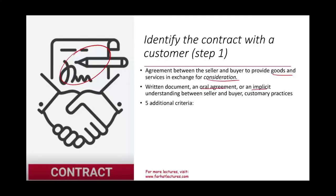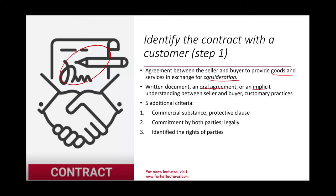We need five additional criteria to confirm a valid contract. First, it must have commercial substance — a protective clause to prevent companies from entering sham transactions just to inflate revenue. Second, both parties must be committed and aware of their obligations. Third, the rights of each party are identified in the contract. Fourth, payments are identified — they don't have to be fixed, but they have to be identified. Fifth, collection must be probable — if there's no probability of collecting money, it's not a valid contract.